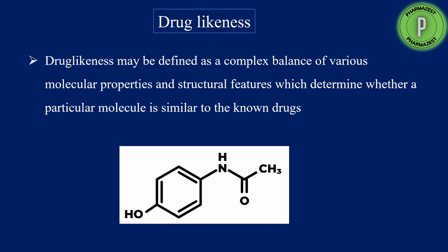Drug likeness can be defined as a complex balance of various molecular properties and structural features which determine whether a particular molecule is similar to known drugs. For example, taking the structure of a paracetamol molecule, there are different functional groups: an aromatic ring, an OH group, a C=O group, an NH group, and a methyl group. The question is which functional group is responsible for its drug likeness activity.